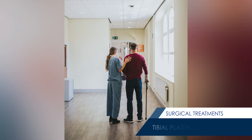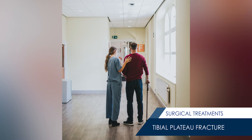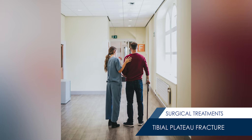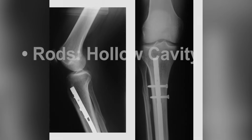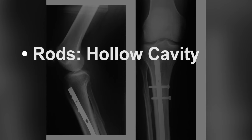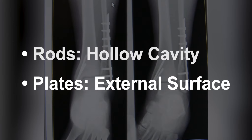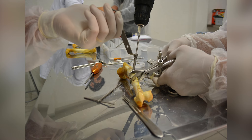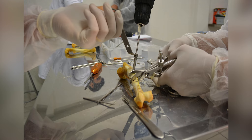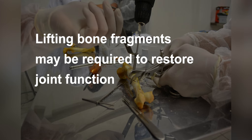If surgical treatment is elected, several devices may be considered. In some cases where the upper one-fourth of the tibia is broken but the joint is intact, a rod or plate may be used to stabilize the fracture. A rod is placed in the hollow cavity in the center of the bone, whereas a plate is placed on the external surface of the bone. Plates are commonly used for fractures that enter the joint. If the fracture enters the joint and depresses the bone, lifting the bone fragments may be required to restore joint function.